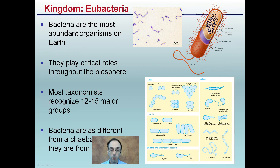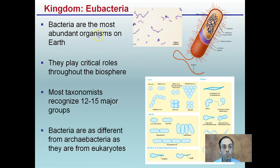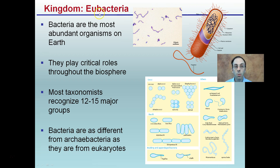Looking at Eubacteria and classifying these: their bacteria are the most abundant organisms on Earth and play critical roles throughout the biosphere. Most taxonomists recognize 12 to 15 major groups. Bacteria are as different from Archebacteria as they are from Eukaryotes, making them their own unique classification. Eubacteria are simple, prokaryotic in nature, with different shapes that help identify them — which is why there's some variance in the 12 to 15 major groups.